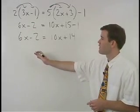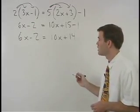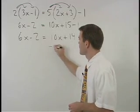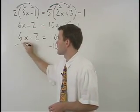Moving our variables to the left and numbers to the right, we start by subtracting 10x from both sides.